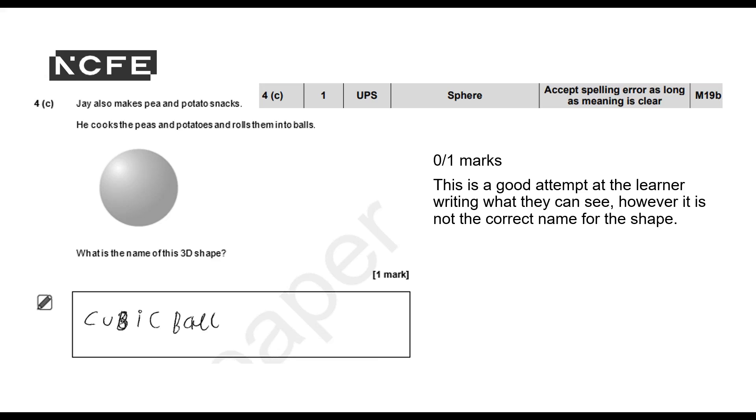So zero marks, unfortunately. It's a good attempt at the learner writing what they can see, however it is not the correct name for the shape. The only answer we would accept is sphere, but we would accept a spelling mistake so long as the meaning is clear.